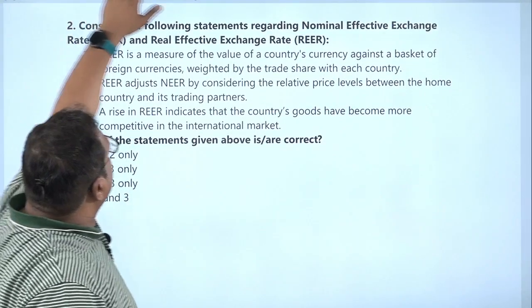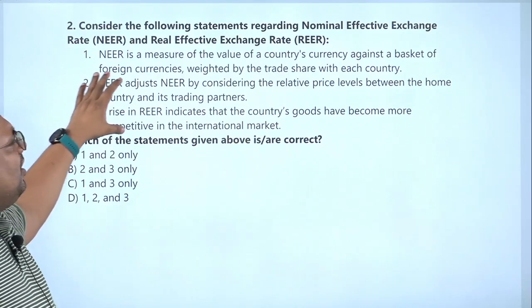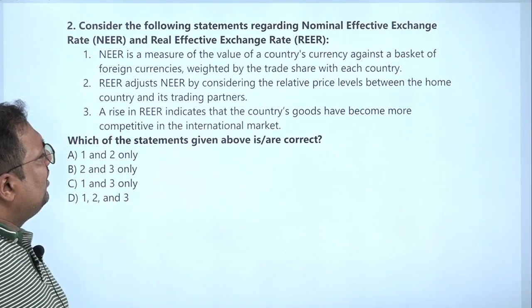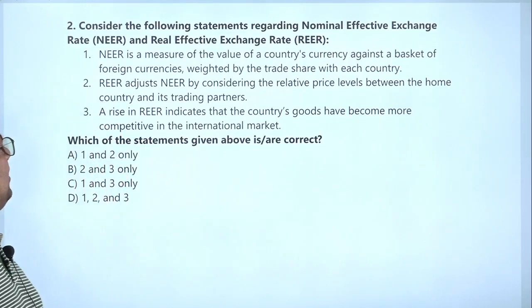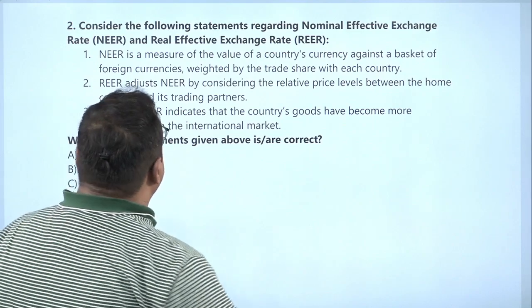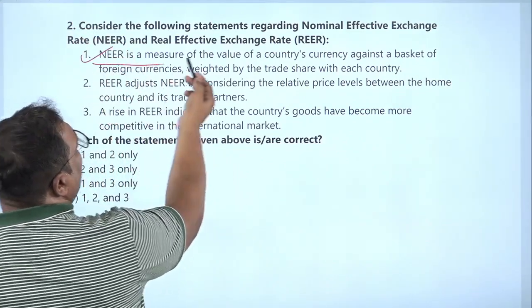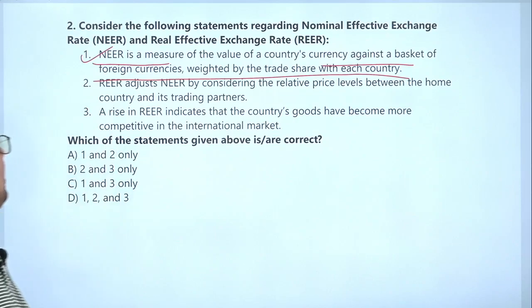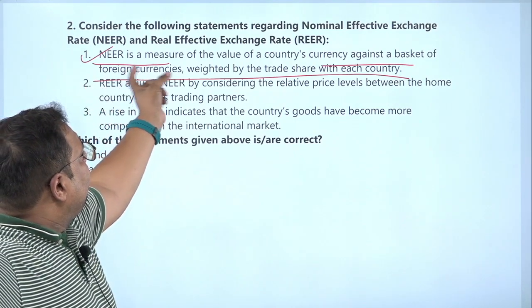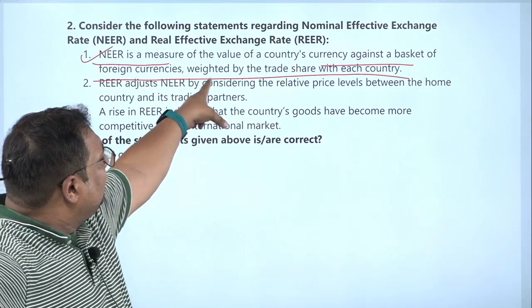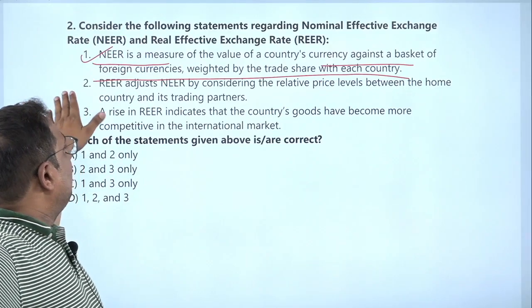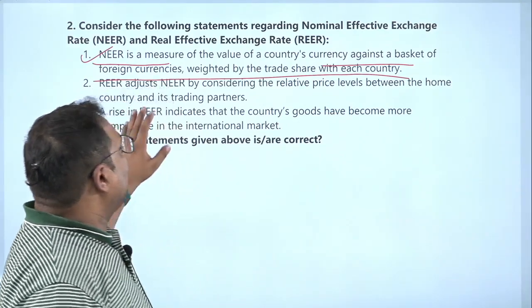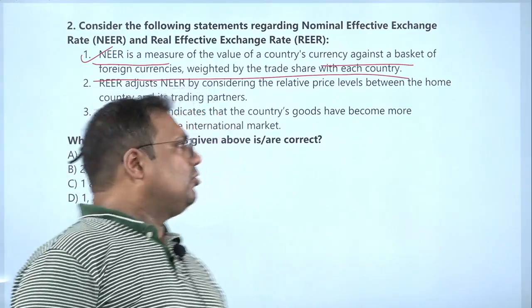Let us look at the next question. Consider the following statements regarding NEER and REER. First: NEER is a measure of the value of a country's currency against a basket of foreign currencies weighted by trade share with each partner country. That is absolutely correct — it gives a clear definition of what NEER is: a weighted average weighted by trade share. Second: REER adjusts NEER by considering the relative price level between the home country and its trading partners. That is exactly what we have done, so the second statement is also correct.